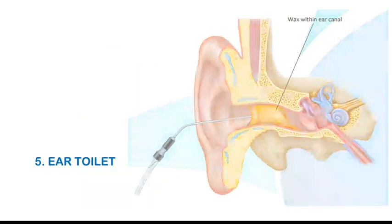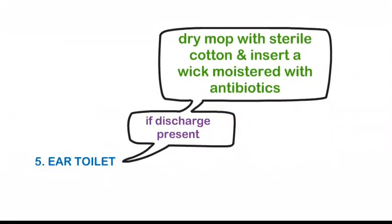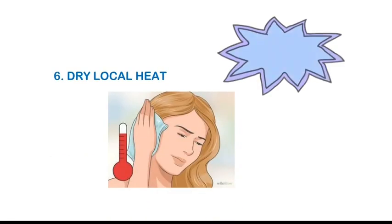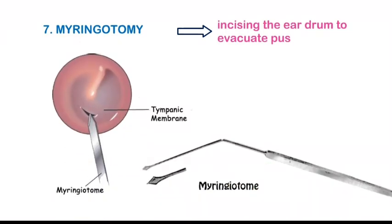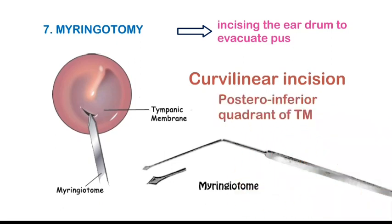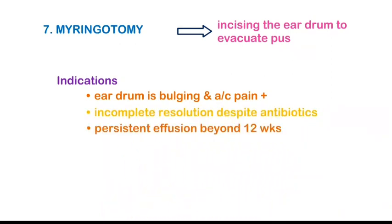Ear toilet using a dry mop with sterile cotton is done, and a wick coated with antibiotic may be introduced to remove the discharge. Application of dry local heat may relieve pain. Myringotomy is done in cases where rupture of the tympanic membrane is feared; a curvilinear incision is made on the postero-inferior aspect of the tympanic membrane as it is more accessible with less risk of damage to surrounding structures. Myringotomy is indicated when there is severe bulging with severe pain, antibiotic therapy is not effective, or if there is persistent effusion beyond 12 weeks.